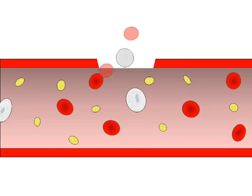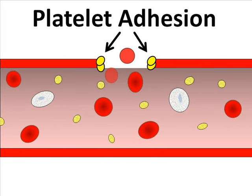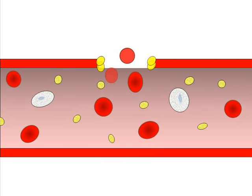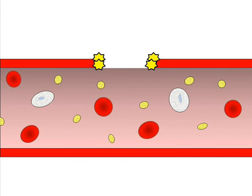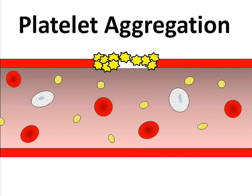Platelets soon recognize the injury and begin to stick to the damaged surfaces. This is called platelet adhesion. The adhering platelets change shape and release chemicals which keep the vessel constricted and draw more platelets into the damaged area. These platelets are said to be activated. Additional platelets arrive and begin to stick to one another so that a loose plug is formed. This is called platelet aggregation.